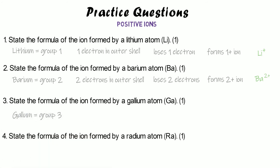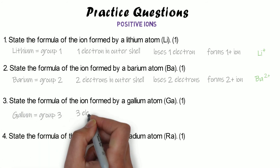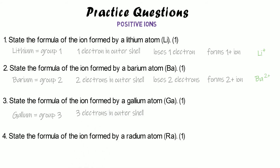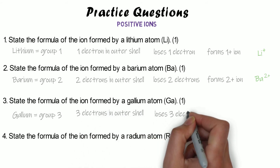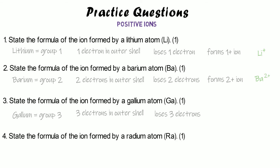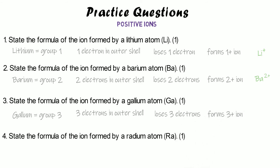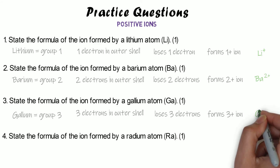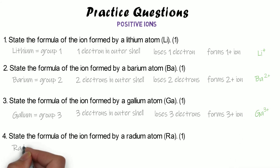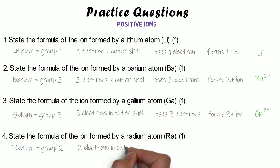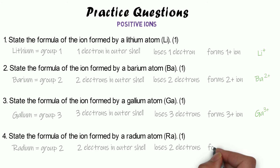Gallium is in group three, so it has three electrons in its outer shell and it's going to lose all three of them. If you lose three negative electrons, you form a 3+ ion, so the formula for that ion is Ga³⁺. Finally, radium is in group two, so it has two electrons in its outer shell — it loses those two electrons and, because it's lost two negative electrons, it forms a 2+ ion. The formula for that will be Ra²⁺.